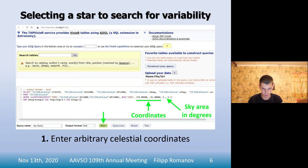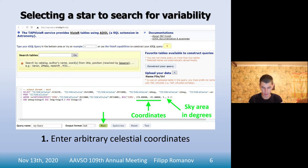How did I choose this star from many others to search for variability? I used the TAP Vizier service. I wrote code in the Astronomical Data Query Language, which you can see in the screenshot, in which I requested data from the AllWISE catalog from a specific area of the sky and with certain colors and magnitudes of the stars, in order to exclude possible Mira-type variables from the search results.